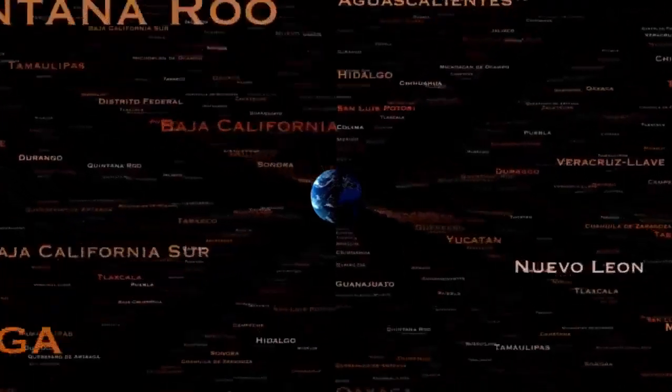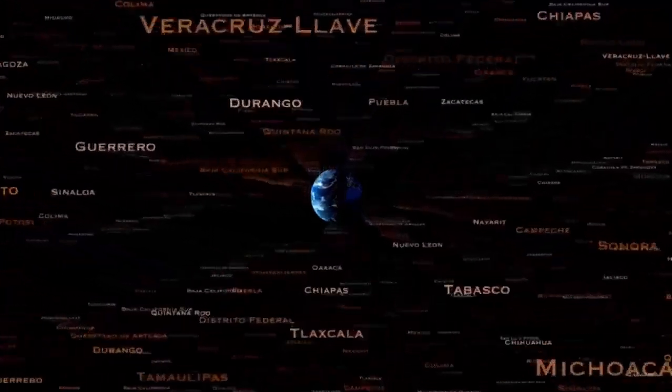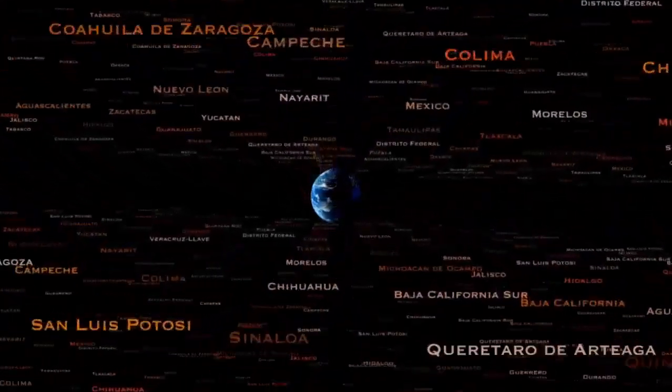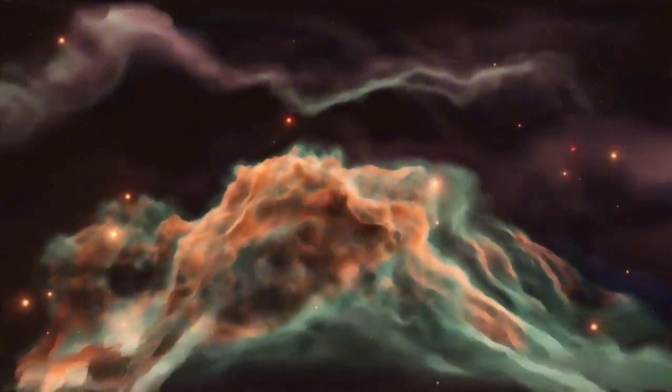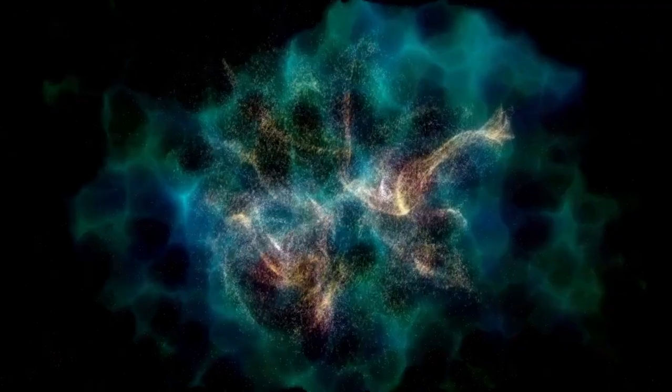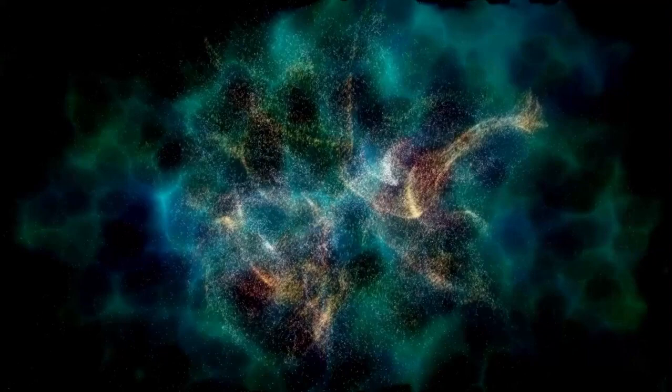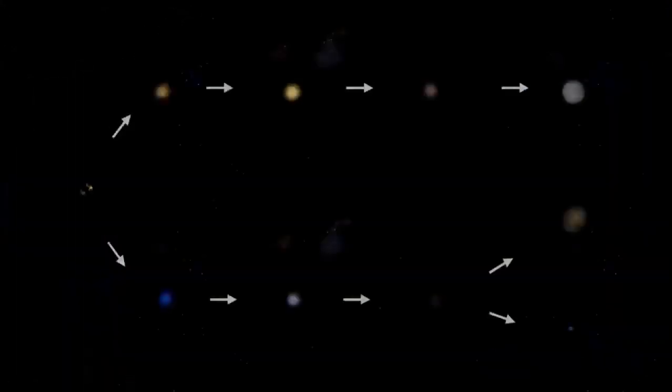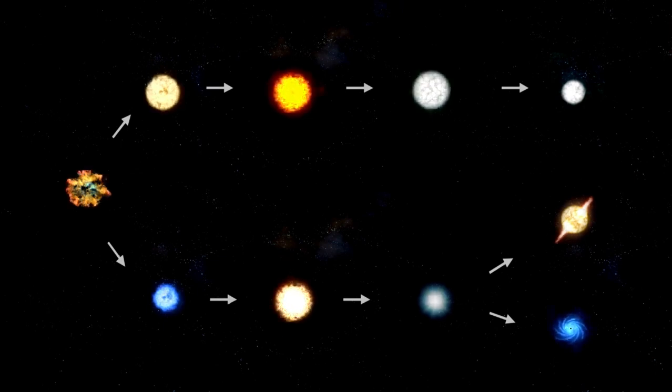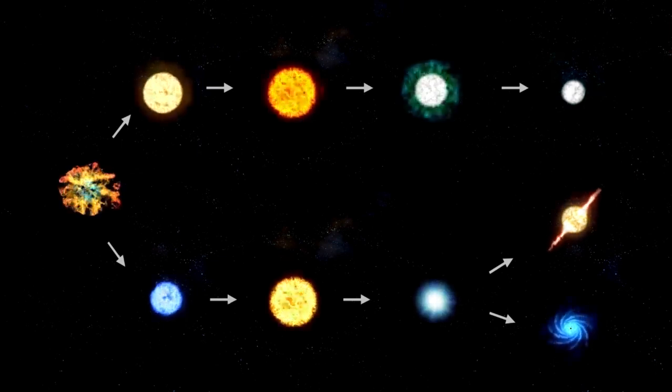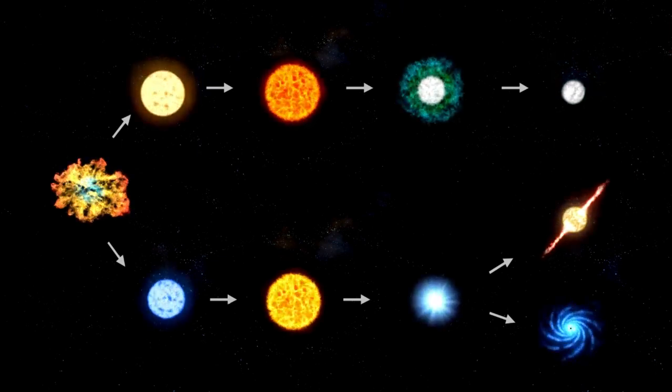Some said maybe a huge flow of gas and dust from the star's surface caused this dimming. They pictured the star going through a lot, throwing off its outer parts in a huge show in space. Others thought there might be a very cold area on Betelgeuse's surface. They imagined a spot where temperatures dropped a lot, making the star less bright. While all this was going on, a bunch of scientists from different places, led by Kenichi Namoto at the Kavli Institute, started looking into it.